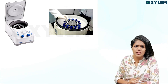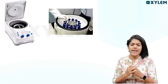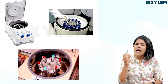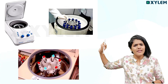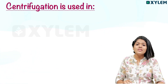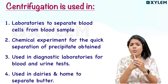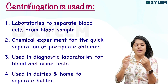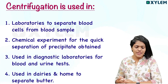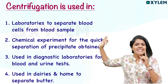This is the centrifugation machine with test tubes. The process separates components based on density. One of the uses of centrifugation is in laboratories — to separate blood cells from blood samples. Blood tests use centrifugation to separate red blood cells, white blood cells, platelets, and plasma.